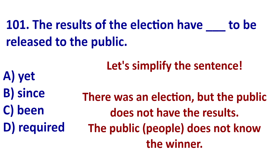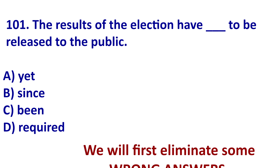When we read this, the basic idea is there was an election. Right now, the public does not have the results. The public does not know the winner of the election. So we have that idea, and now let's start eliminating answers.